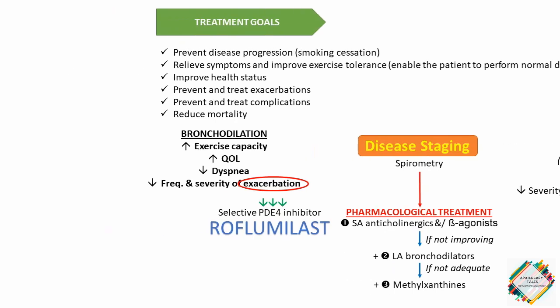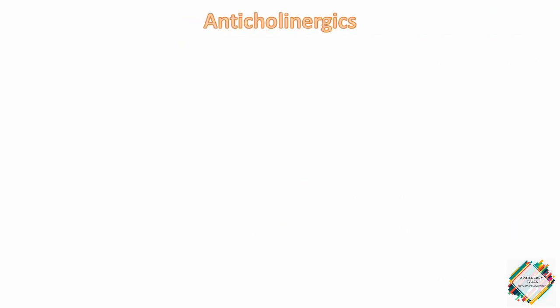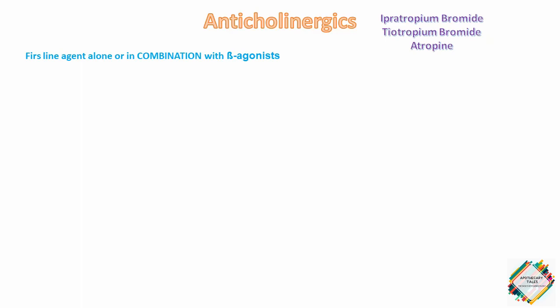First, we are going to talk about anticholinergics such as ipratropium bromide, tiotropium bromide, and atropine. These anticholinergics may be used as first-line bronchodilators or in conjunction with beta-agonists in the treatment of COPD, because these agents are the most potent bronchodilators for this condition.